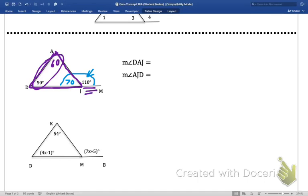So now if we go ahead and put things in, angle DAJ, which would be up top, would be 60 degrees, and AJD would be the 70 degree angle. Alright, good stuff.